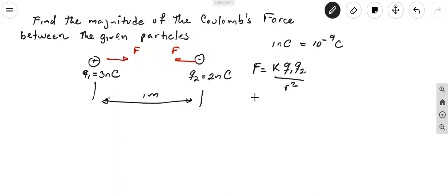So if I substitute now the values of the different variables in this formula, we have that k is 9 times 10 to the 9 newtons meter square over coulomb square times, we have the charge q1 of 3 nanocoulombs, so it would be 3 times 10 to the negative 9 coulombs.